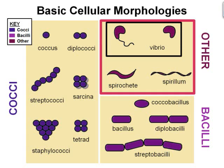Most bacterial species are either spherical, rod-shaped, or a version of the two. This is shown in section 3, classified here as other. Some rod-shaped bacteria, called vibrio, are slightly curved or comma-shaped. Others can be spiral-shaped, called spirilla, or tightly coiled, called spirochetes. A small number of species even have tetrahedral or cuboidal shapes. More recently, bacteria were discovered deep under the Earth's crust that grow as long rods with a star-shaped cross-section. The large surface area-to-volume ratio of this morphology may give these bacteria an advantage in nutrient-poor environments. This wide variety of shapes is determined by the bacterial cell wall and cytoskeleton, and is important because it can influence the ability of bacteria to acquire nutrients, attach to surfaces, swim through liquids, and escape predators.